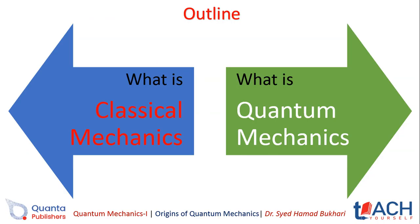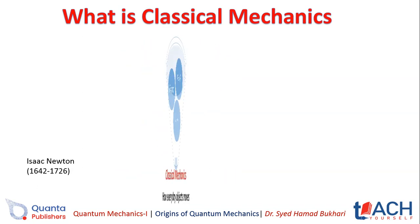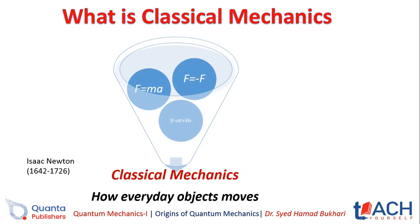Let's start. First of all, our topic outline covers what is classical mechanics and what is quantum mechanics — and the difference between them, and what is the reason for quantum mechanics. Quantum mechanics was started from around 1600 by Isaac Newton, with the famous equation F = ma, and the third law: action and reaction are equal and opposite, F = -F, and the equations of motion.